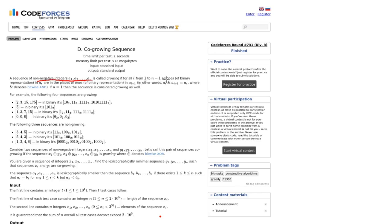In other words, ai AND ai+1 equals ai. That's the main idea. And if n equals 1, the sequence is considered growing as well.